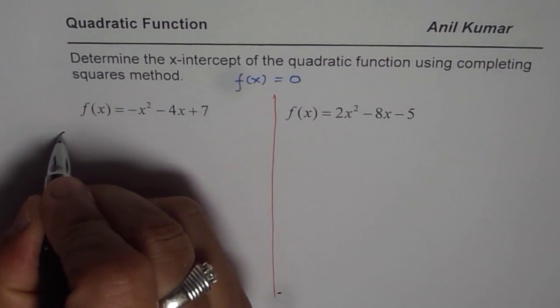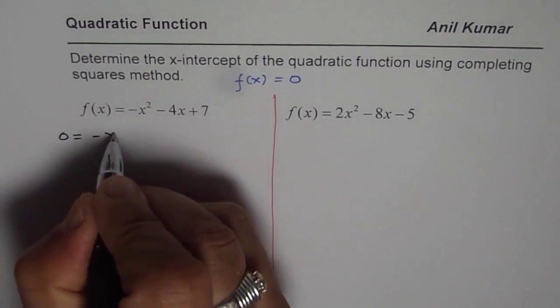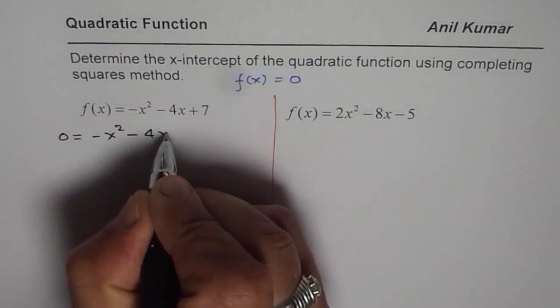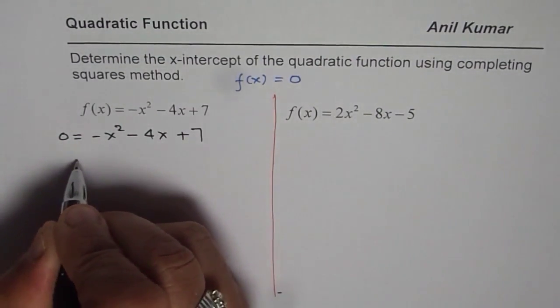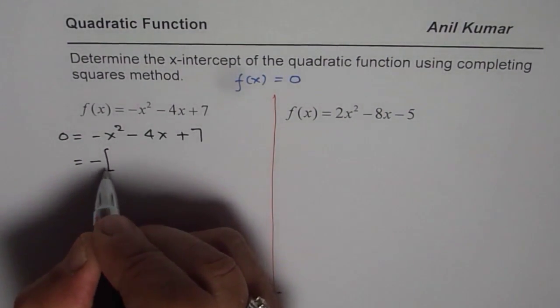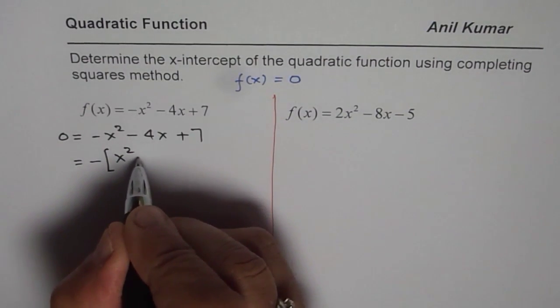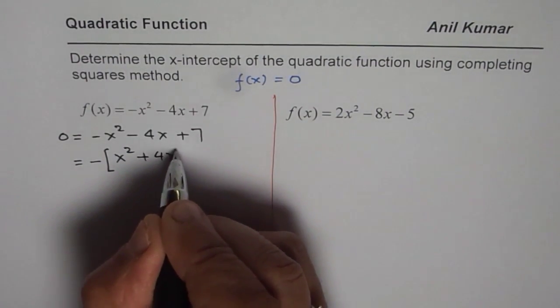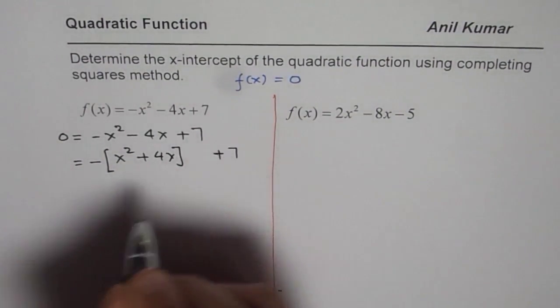So let me write 0 here and then 0 = -x² - 4x + 7. For completing the squares, we have to take the coefficient of x² common. Taking minus common, we get x² + 4x + 7.